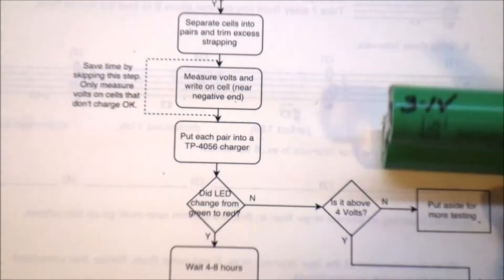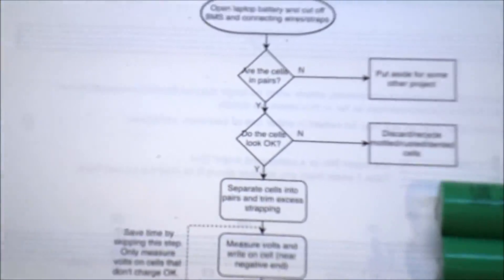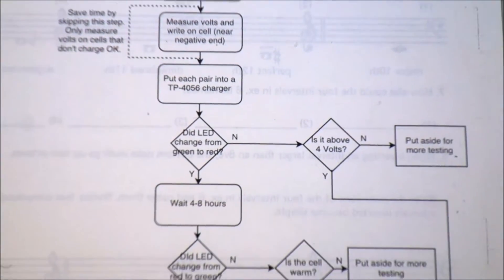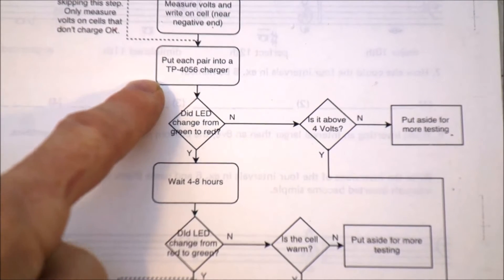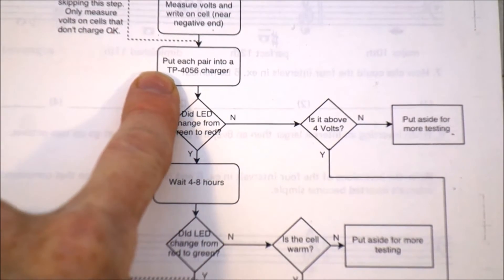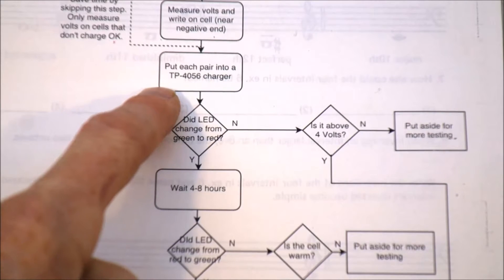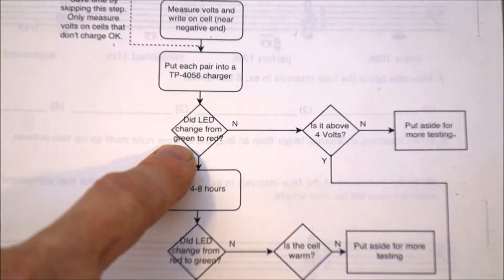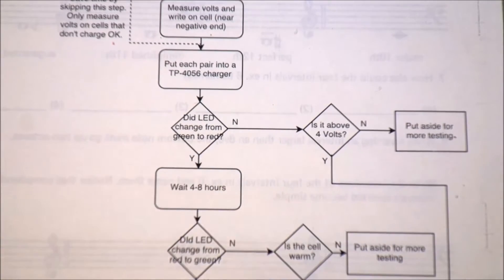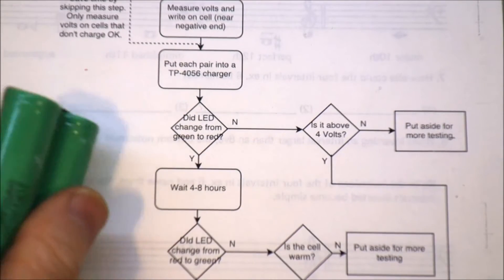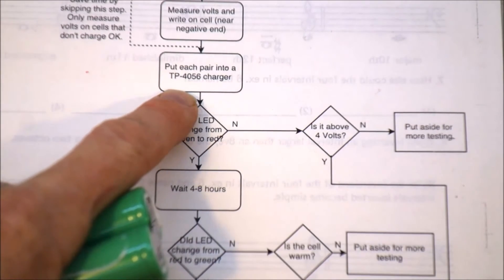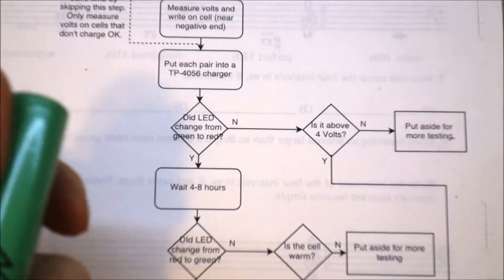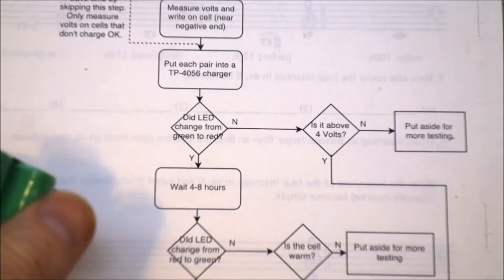Next, I put them in my charger, that thing over there, put lots of those in. And then I move on to... So I put them in the TP4056 charging bank and I look to see whether the green LED has turned to red. If it turns to red, that means that the TP4056 charger thinks there's a good battery in there, good enough to charge, and it's started charging.